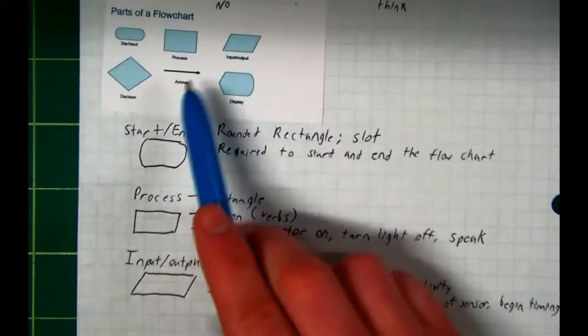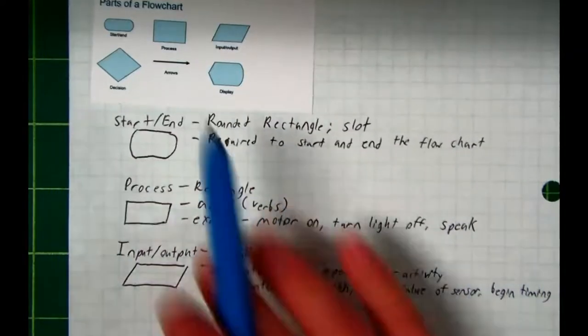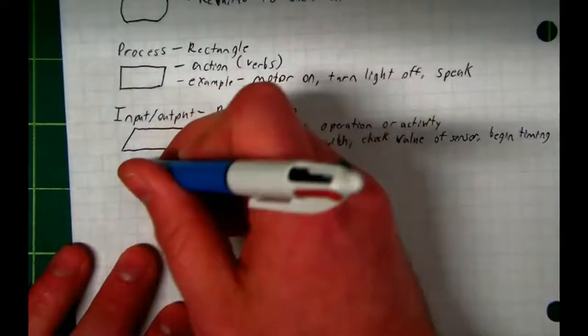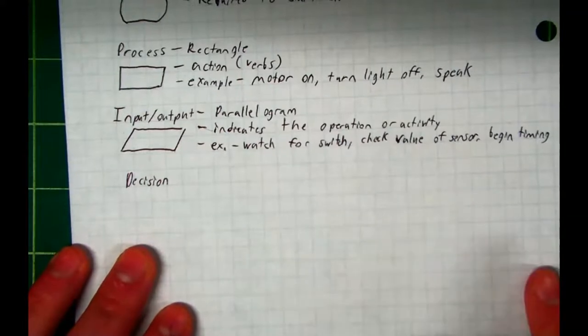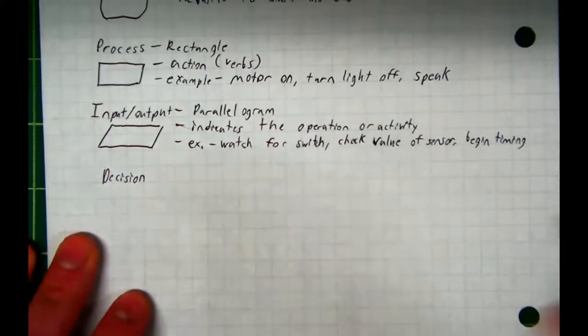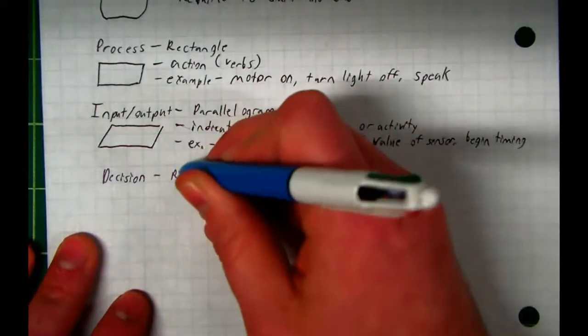Hopefully I don't need to spend any time on arrows, and we're not going to talk about displays today. But let's go ahead and talk about a decision. The decisions in flowcharts are based on Boolean logic. Yes or no, on or off. The shape we use is a rhombus.